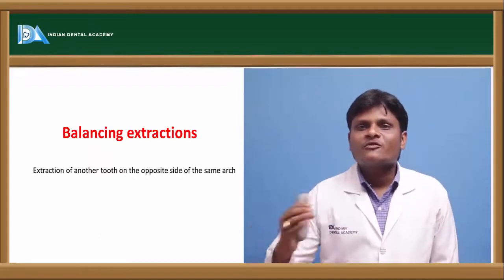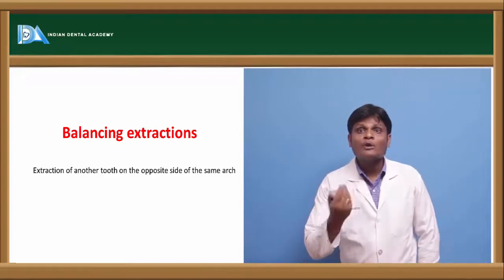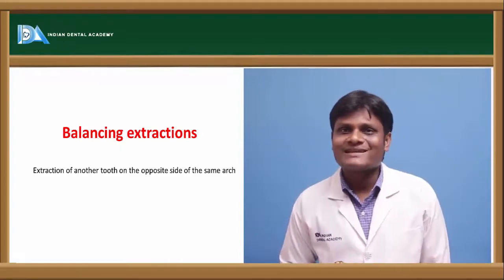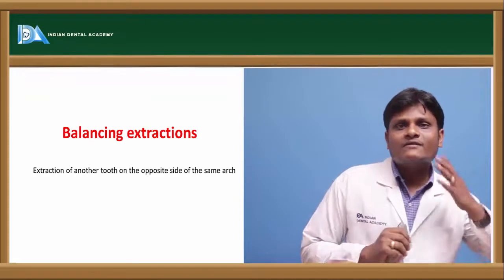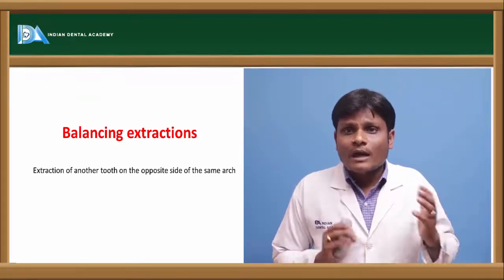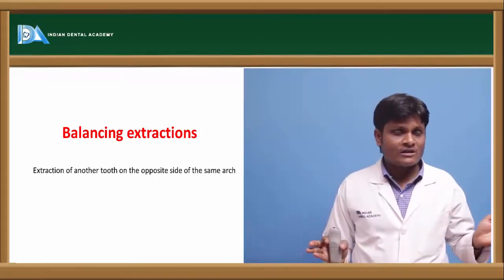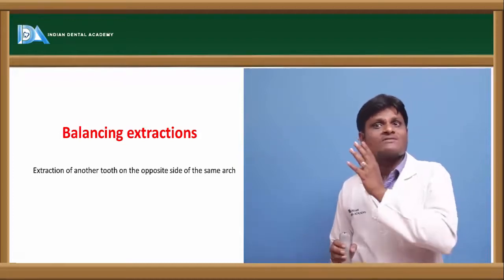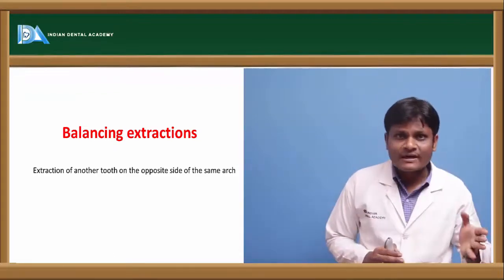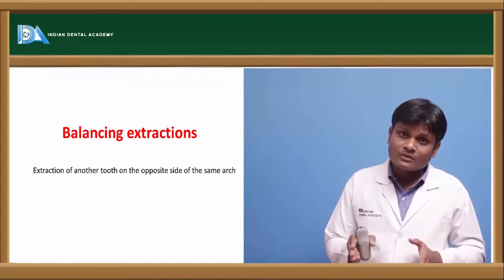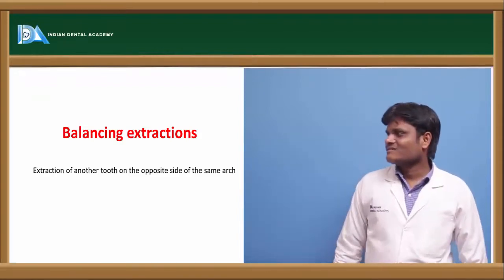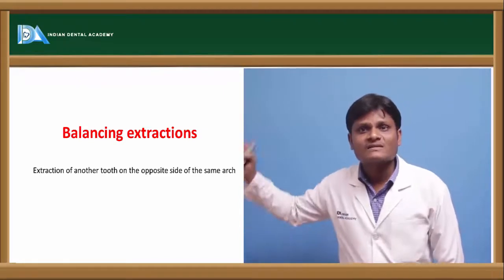Now, few terminologies: balancing extractions. For example, if I have a case of severe crowding and I extract the first premolar on the right side but leave the first premolar on the left side intact, I will relieve the crowding but will cause a midline shift towards the right side, which should not happen. That is why, in order to balance the right and left sides, we need to extract the same tooth on the opposite side. This is called balancing extraction — extraction of the corresponding tooth in the same arch on the opposite side.